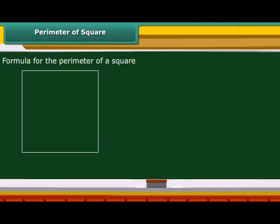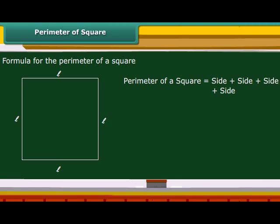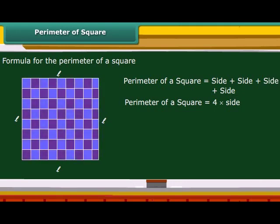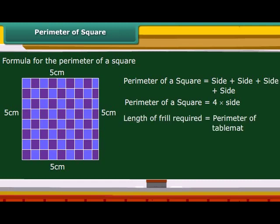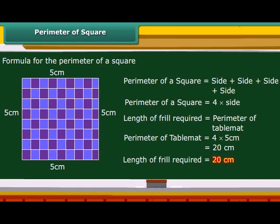Now let us work out the formula for the perimeter of a square. All four sides of a square are equal in length, therefore the perimeter of a square is 4 multiplied by its side. Suppose you want to add frills to all sides of a square table mat whose side is 5 centimeters. The length of the frill required equals the perimeter of the table mat, which is 20 centimeters. Therefore, a 20-centimeter-long frill is required.